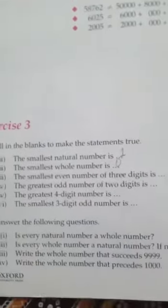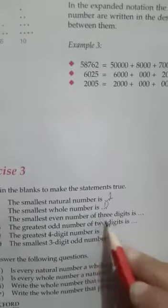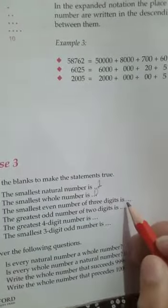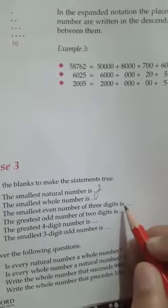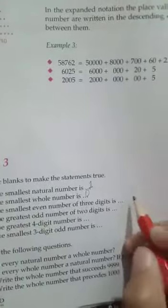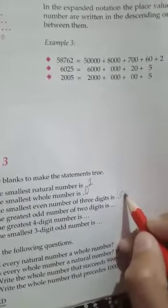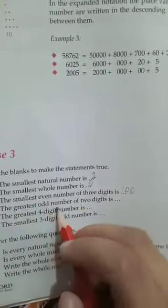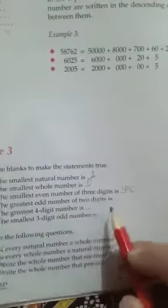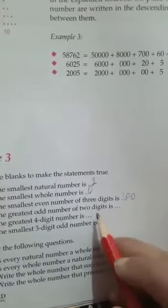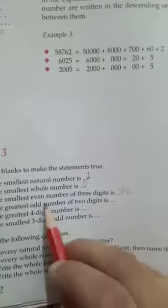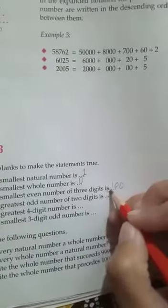The smallest even number of 3 digits is — even number kya hota hai jo 2 par divide ho. Aur aapne kaun sa dekhna hai: 3 digit number aur wo bhi sabse smallest. 99 ke baad 3 digit numbers start hote hain — 99 ke baad 100 aata hai. 100 ek 3 digit number hai aur smallest bhi hai, aur wo even bhi hota hai, toh yahan aayega 100. The greatest odd number of 2 digits is dash — sabse bada 2 digit number 99 hai, aur wo odd bhi hai, toh answer is 99.